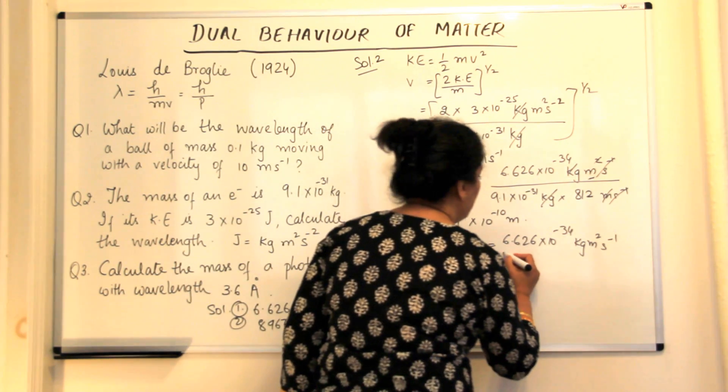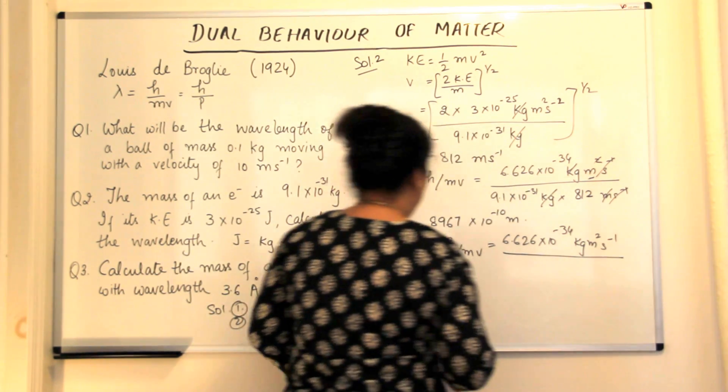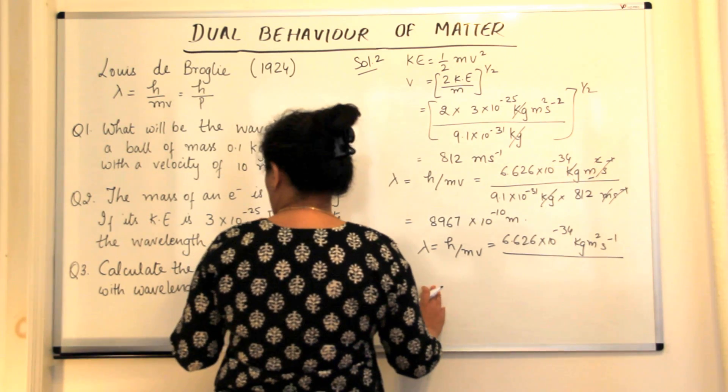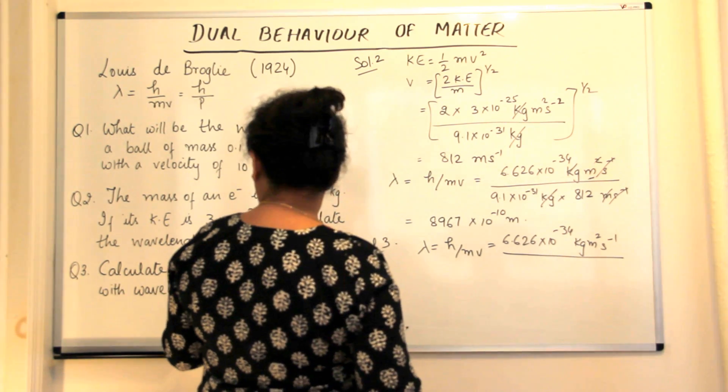which is equal to 6.626 into 10 to the power minus 34 kg meter square second minus 1, because plus 1 and minus 2 would become minus 1, divided by the mass of, oh sorry,